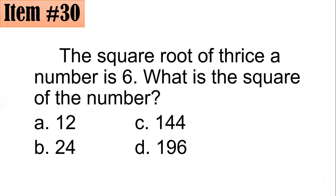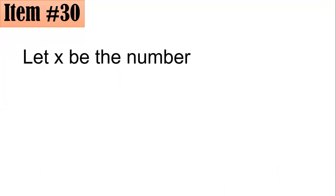Number 30. The square root of thrice a number is 6. What is the square root of the number? Is it 12, 24, 144, or 196? From here, if you have the square root of thrice a number, if you let x be the number, then thrice of it will be 3x. So you will take the square root of 3x, and that's 6 according to the problem.